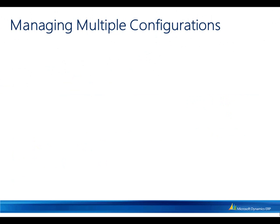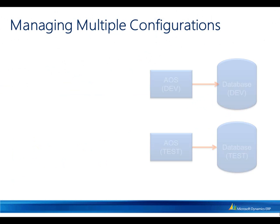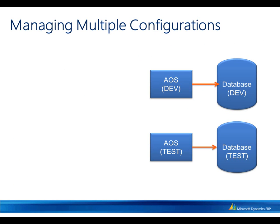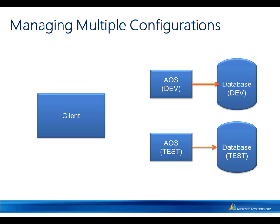Here's an example of when we might have a single client that would want to connect to multiple environments. In this example, I'm going to have two different installed environments: a database with an AOS pointing to it for my development environment, and another AOS and database for my test environment. However, on my machine I can only have a single client installed, so I need to be able to select which environment I want to connect to using the Dynamics AX configuration utility.